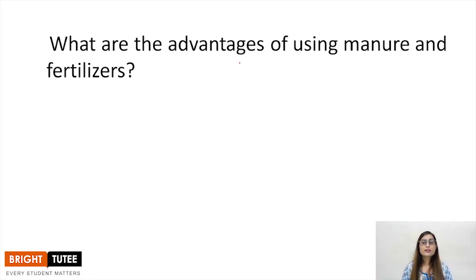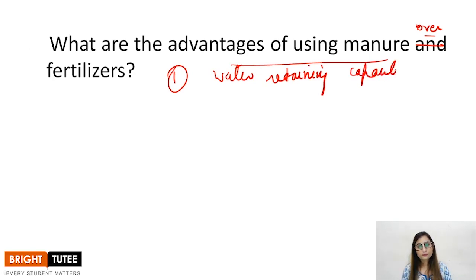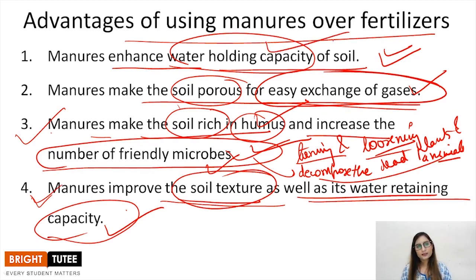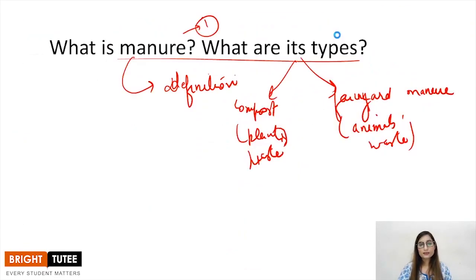What are the advantages of using manure over fertilizers? Firstly, it increases the water retaining capacity of soil. Secondly, it makes the soil porous for the better growth of microbes. Thirdly, it makes the soil rich in humus and increases the number of friendly microbes, which is important for turning and loosening of soil and decomposition of dead plants and animals to obtain the nutrients back. Also, manure improves the soil texture as well as the water holding capacity. These are the advantages of using manures over fertilizers.